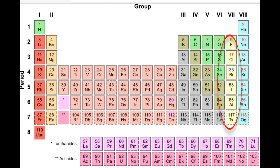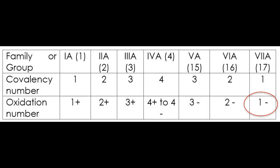Elements in Family 17 or Group 7A can carry a charge of negative one. This means that the elements of this family can accept one electron. An example of these elements is the chlorine atom.